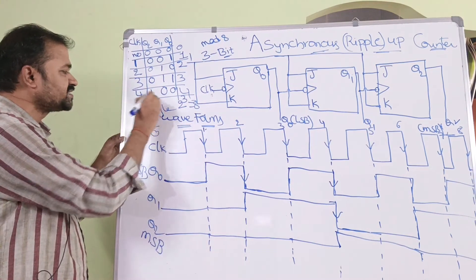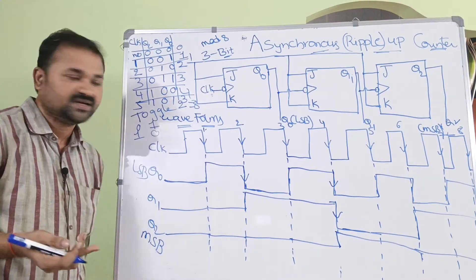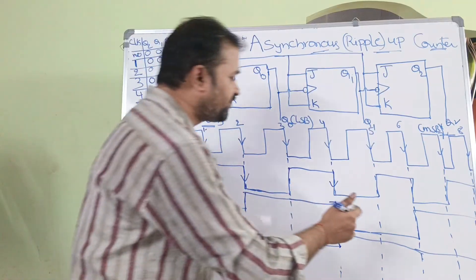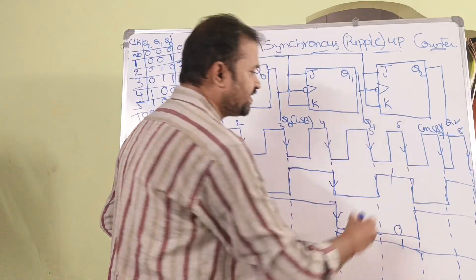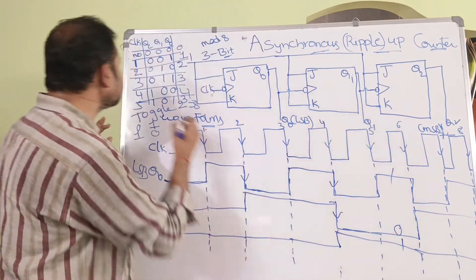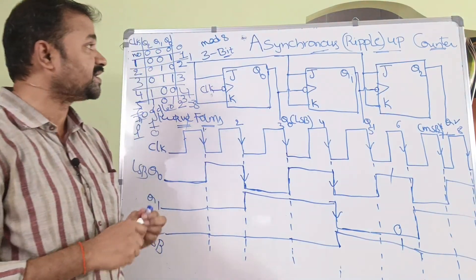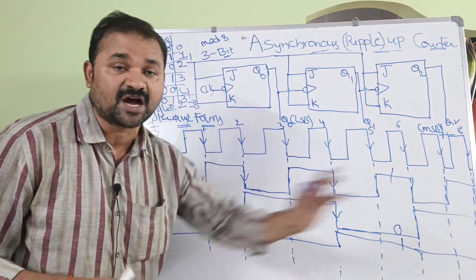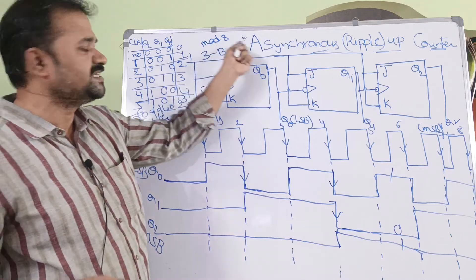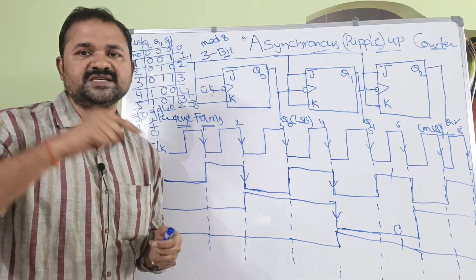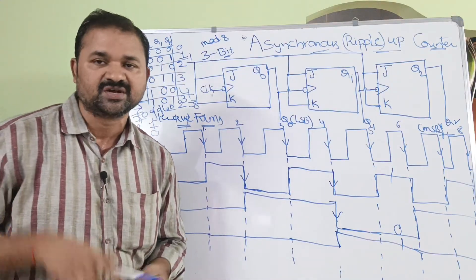If we apply the fifth clock pulse, we get output 101, which is decimal 5. For the sixth clock pulse, the output is 110, which is 6. For the seventh clock pulse, the output is 111, which is 7. This is a 3-bit asynchronous ripple up counter, also called a mod-8 counter, because 3 bits give a maximum of 2³ = 8 states, from 0 to 7.